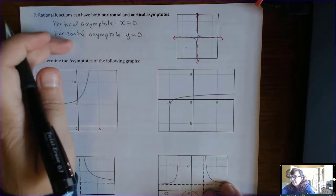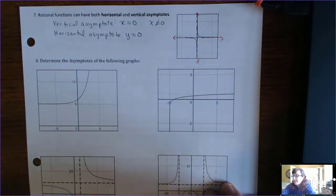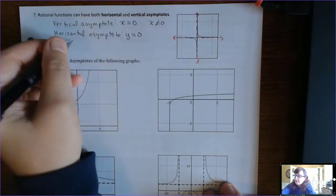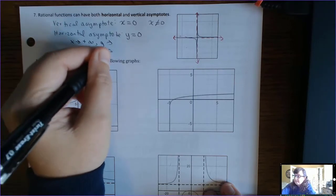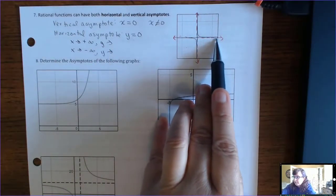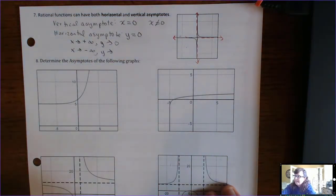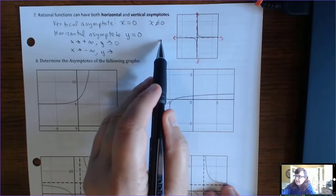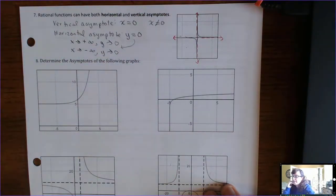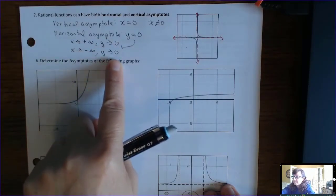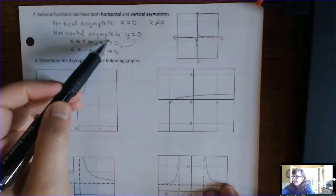These two things mean different things. The vertical asymptote x equals 0 means that x cannot be 0 — that 0 is not in the domain. But y equals 0 means something different: it means end behavior. As x approaches positive infinity, y is leveling off at 0. And as x goes to negative infinity, y is also leveling off at 0. So the horizontal asymptote value is what y is approaching as x heads toward infinity in either direction.